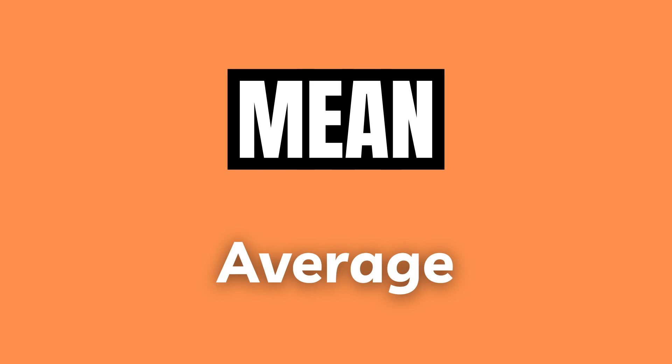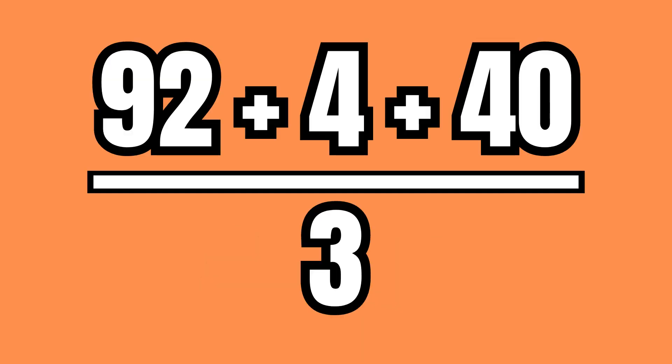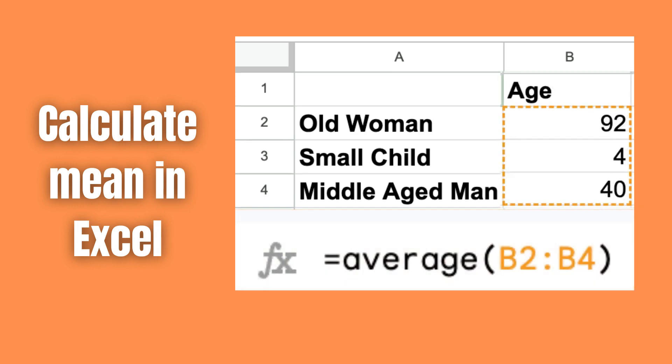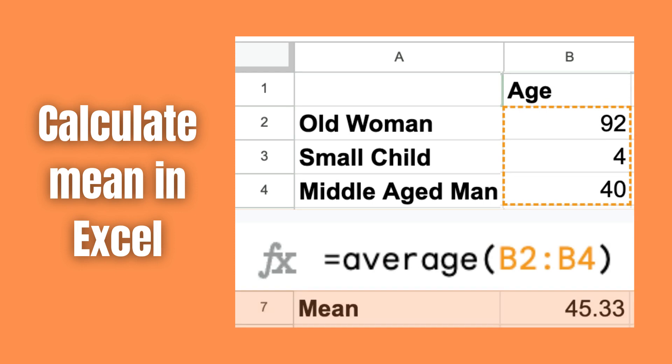We can calculate their mean or average age by summing their different ages together and dividing that sum by the amount of members of the population in question, which in this case is three. In Excel we can either sum the ages together first and then divide by three, or we can simply use the average formula and select the data range we are interested in, like so. Then we see that the average age of this population is 45.33.